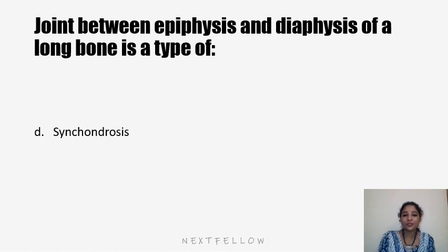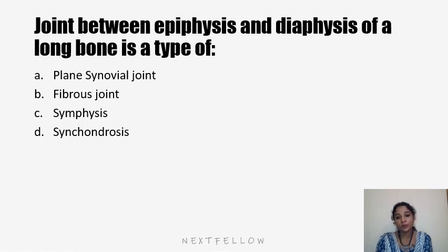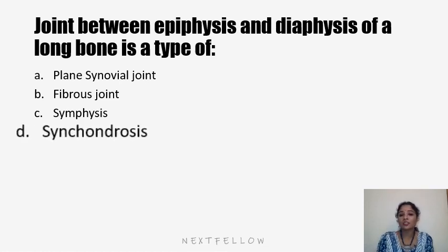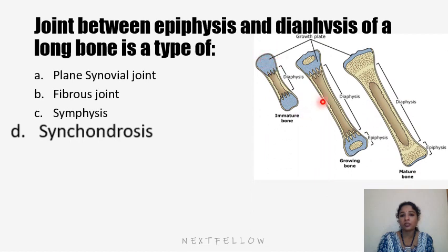Now let's discuss a few questions. The joint between the epiphysis and diaphysis of a long bone is what type of joint? Options: plain synovial joint, fibrous joint, symphysis, or synchondrosis. The answer is synchondrosis — a variety where hyaline cartilage occupies the joint gap between the two bones. All the growing ends are examples of synchondrosis, with hyaline cartilage forming the epiphyseal plate.